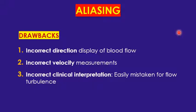The third drawback is incorrect or improper interpretation, because sometimes when you see the aliasing it might be wrongly mistaken as turbulent flow.